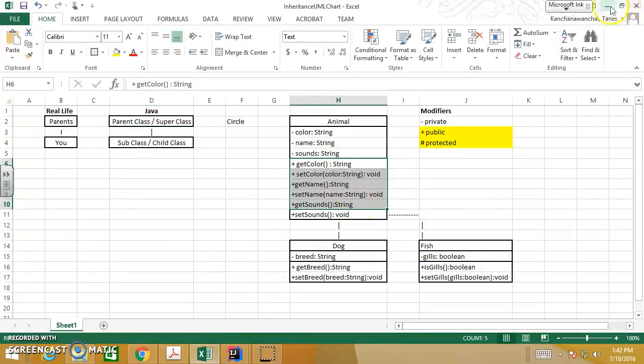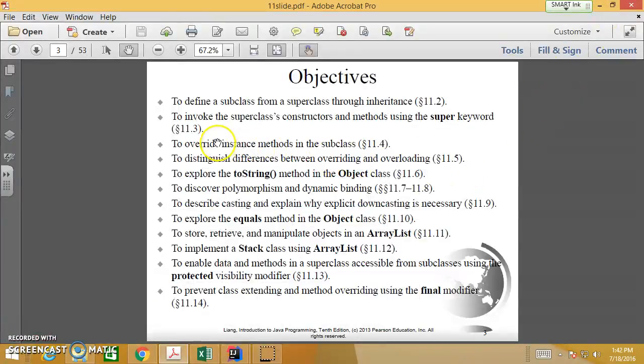We need to override instance methods in the subclass. That's why we learn the concept of overriding. We know that we have overloading methods - methods that have the same name but different signatures. But some methods have exactly the same name and same signature. This is called override because we try to override the parent's method.